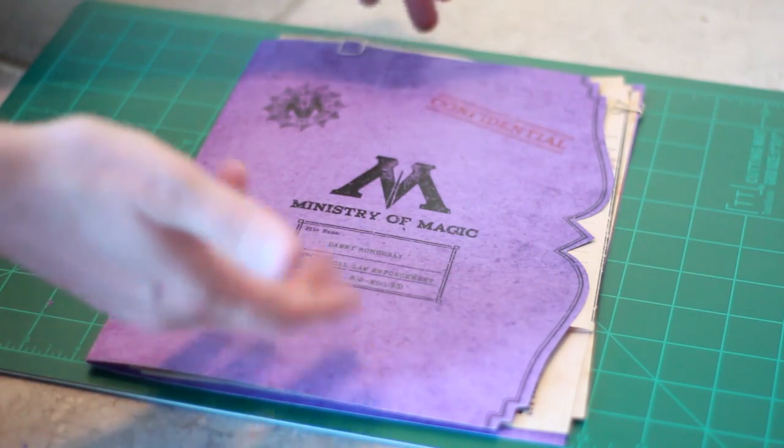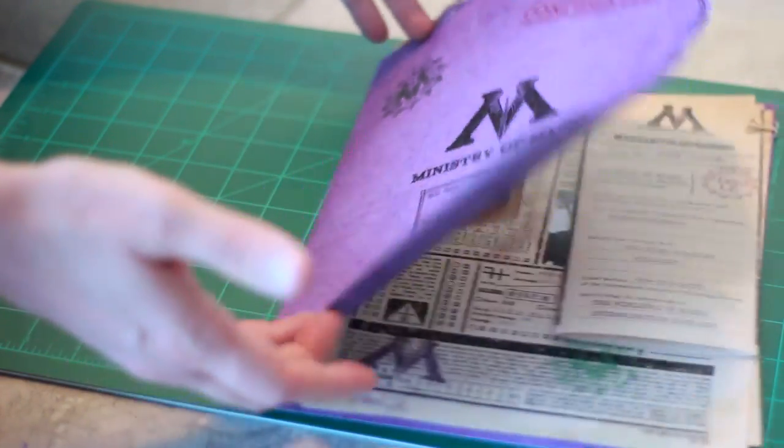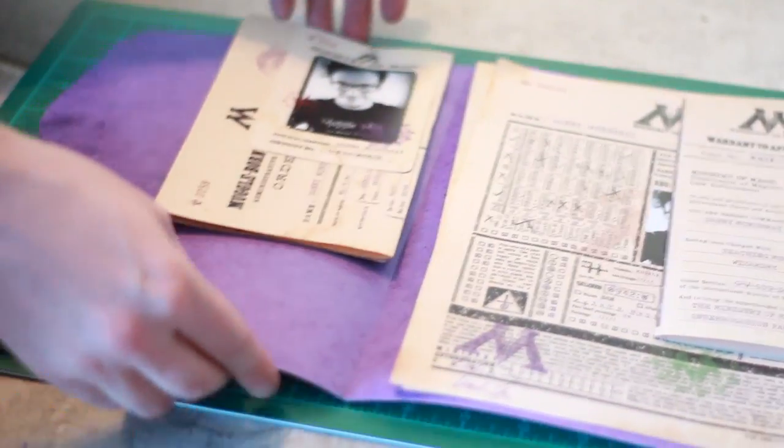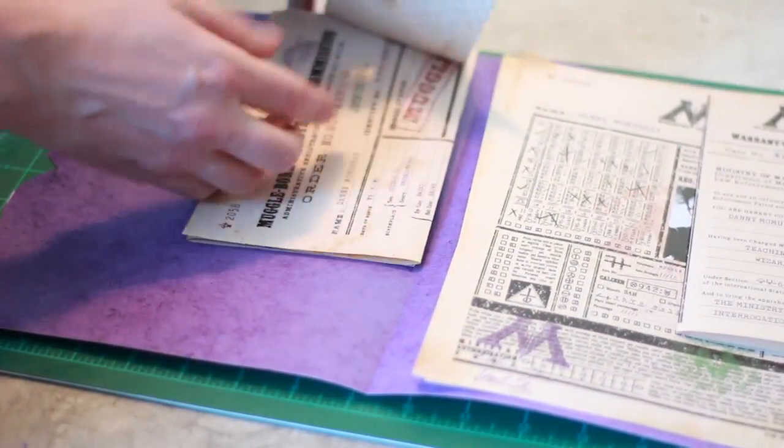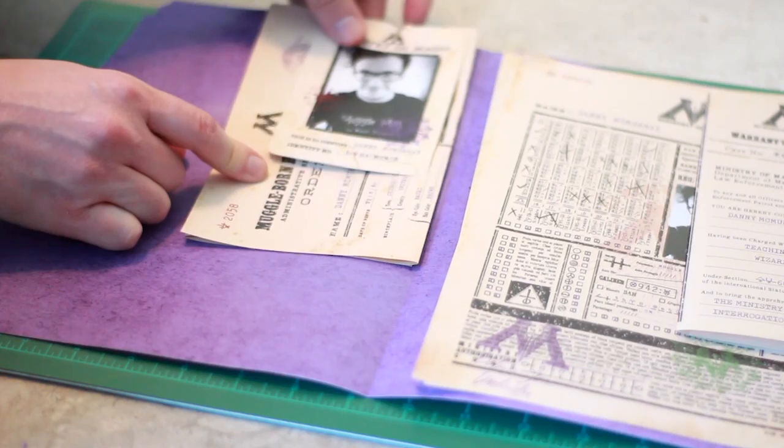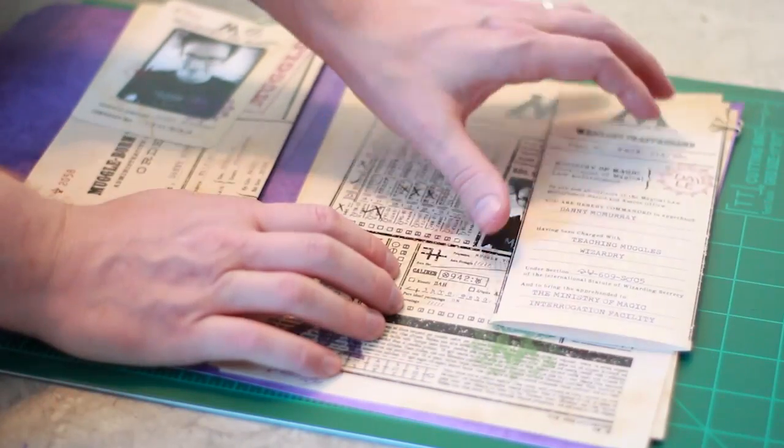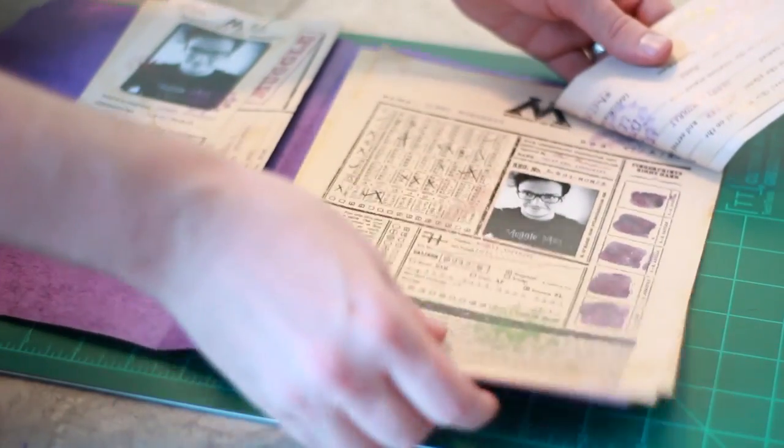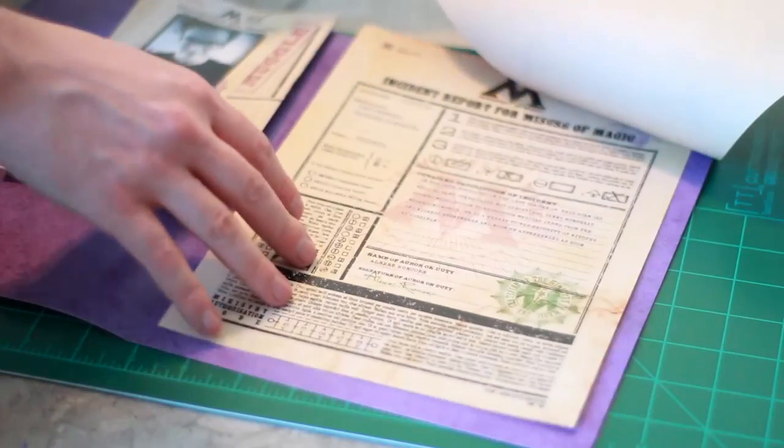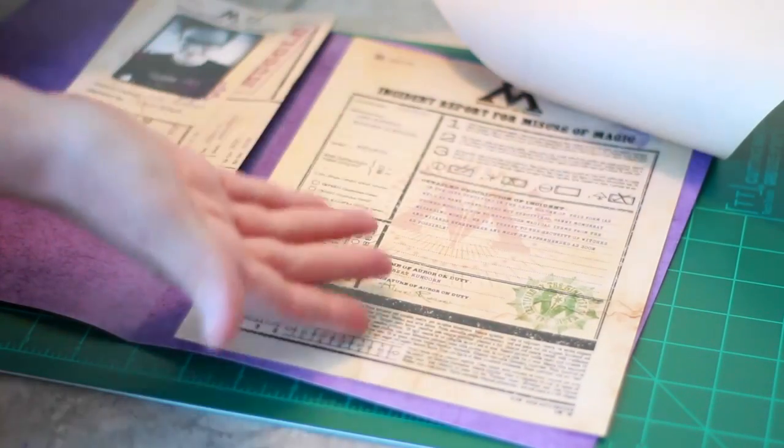So your personal Ministry of Magic file should look like this. And it should open up to your photo as well as a Muggle-born registration file right here, and then we'll have your warrant to apprehend, your personal file, and an incident report for misuse of magic.